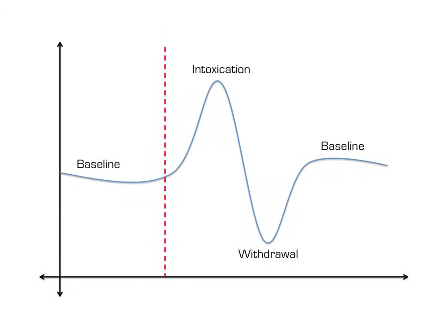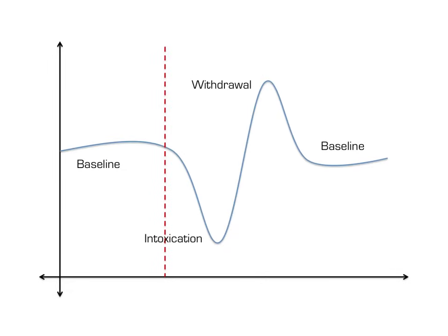I'll be using a graph like this during the presentation to illustrate this concept. This graph indicates a stimulant, such as cocaine or amphetamines. This graph, on the other hand, shows a depressant, such as a benzodiazepine. We'll return to this concept more later.